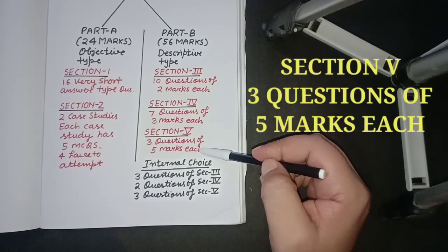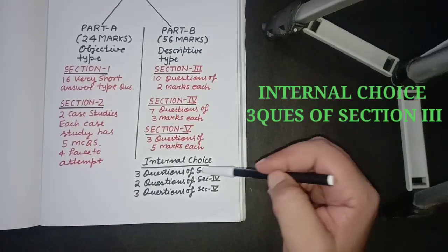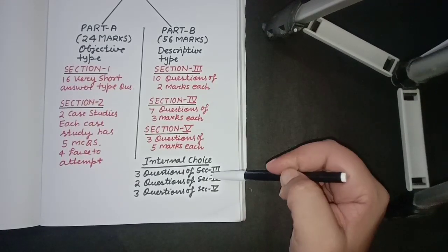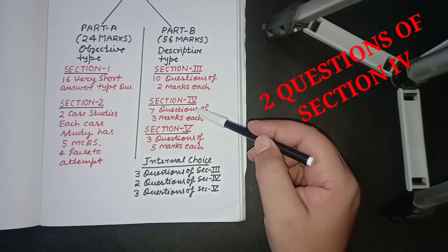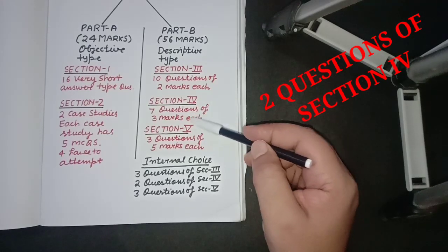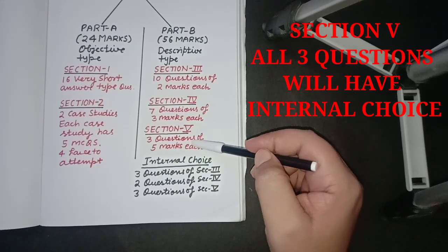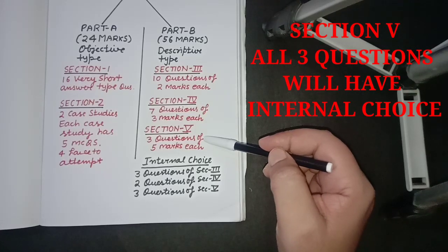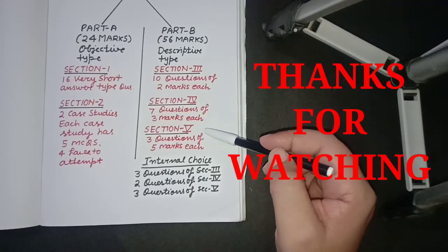There will be internal choice also. In Section 3, there will be internal choice in three questions. Similarly in Section 4, there will be internal choice in two questions. In Section 5, which are long answer questions, there will be internal choice in three questions.